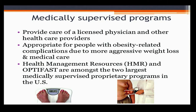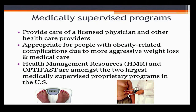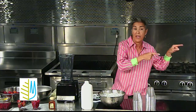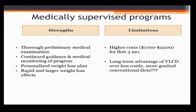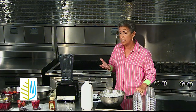Then there are medically supervised programs — weight loss centers like Health Management and OptiFast. These are good for people who are obese, and they're clinically managed with cholesterol checks and medical exams. But they also tell you which meals to consume, which come from them, and you have to pay a lot — anywhere from $1,700 to $2,200. So it's good because of the medical oversight, but it's also costly.